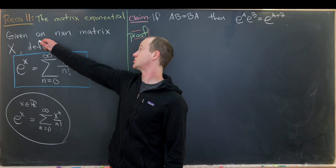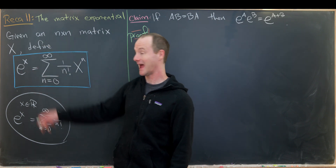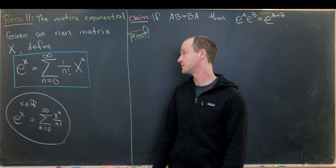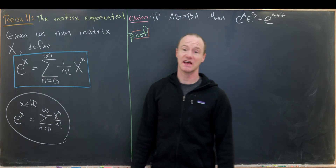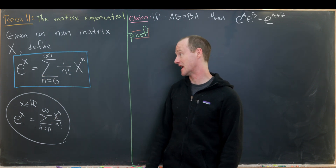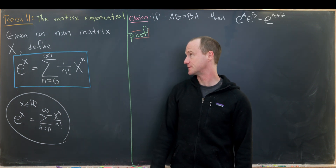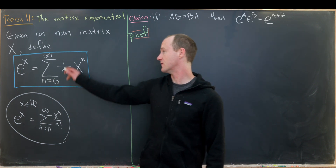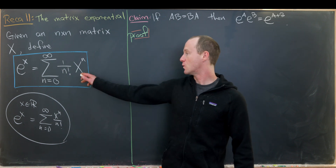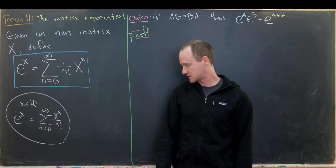Given an n by n matrix X (capital X), we can define the matrix exponential — that's e to the X — as the sum as n goes from zero to infinity of one over n factorial times X to the n, where this is the nth power of the matrix X.